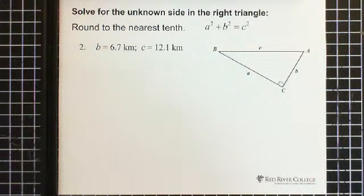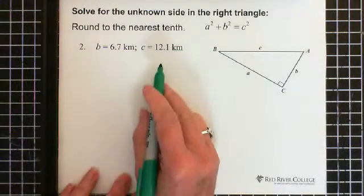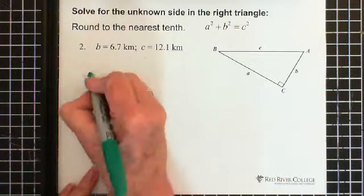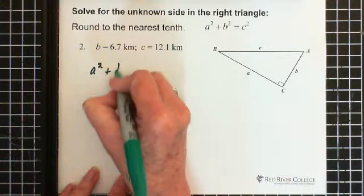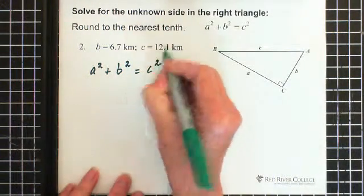Okay, welcome back. Now we're solving for the unknown side, which would be a. Let's write down Pythagoras: a² + b² = c².